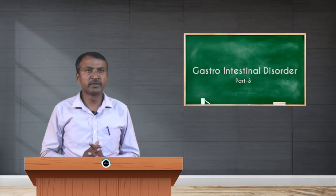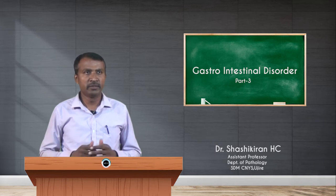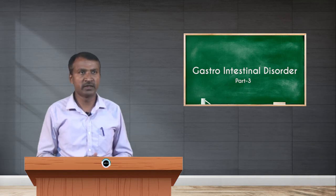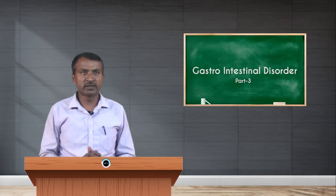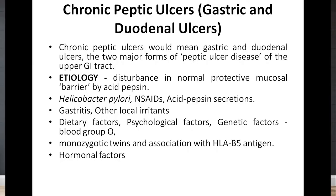Good morning everyone. Today we continue with gastrointestinal disorders, mainly chronic peptic ulcers — gastric and duodenal ulcers. Chronic peptic ulcers would mean either gastric or duodenal ulcers, the two major forms of peptic ulcer disease of the upper GI tract. When we look at the etiology, there is a disturbance in the normal protective mucosa barrier by acid pepsin, which is one of the main reasons, but there are many causes for this disturbance.